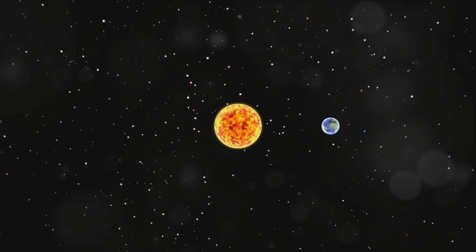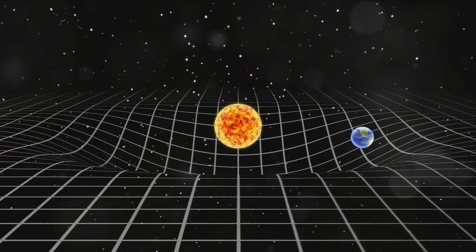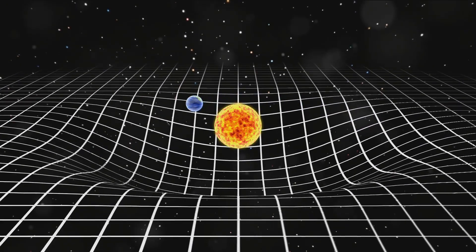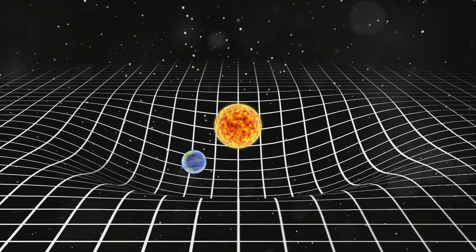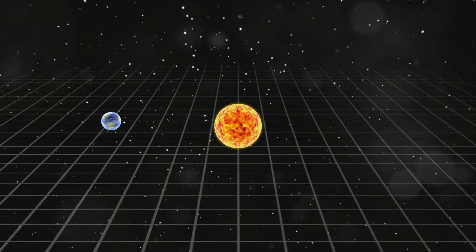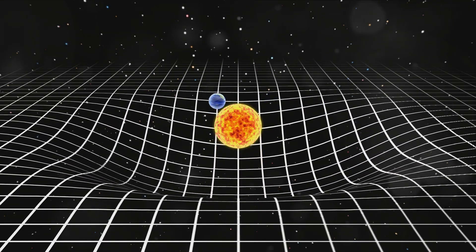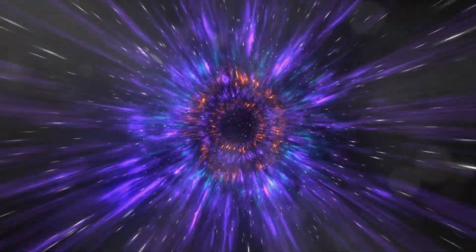Imagine you're on a spaceship traveling close to the speed of light. You decide to toss a ball up and down. To you, the ball is moving vertically. But to an observer outside your spaceship, the ball is tracing a longer diagonal path as your spaceship moves forward. This is known as length contraction. The faster you travel, the shorter the length appears to an outside observer.